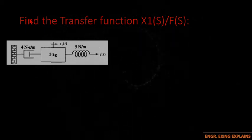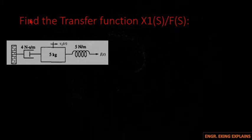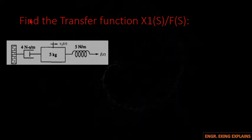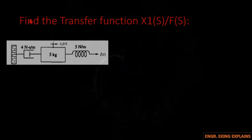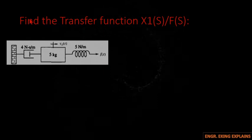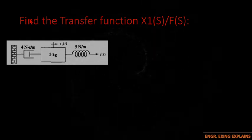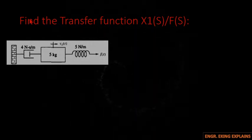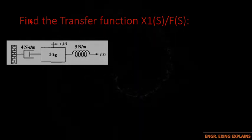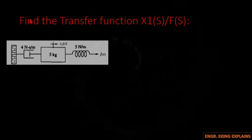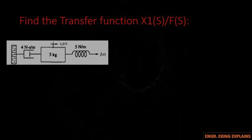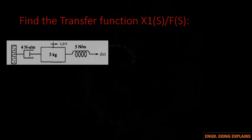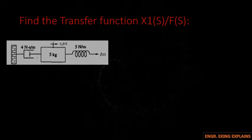We will be solving another example on the transfer function of the translational mechanical system. We have the problem: find the transfer function X1(s) over F(s).